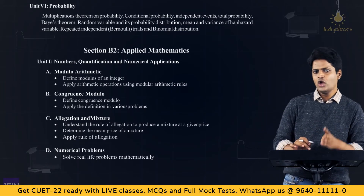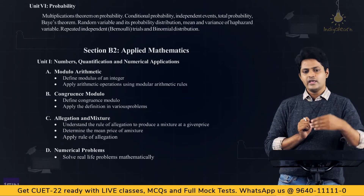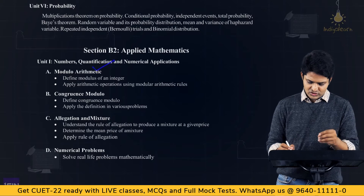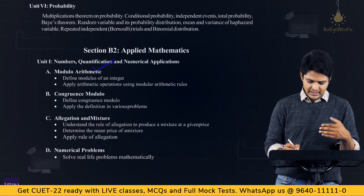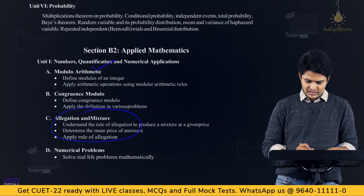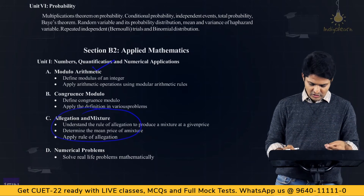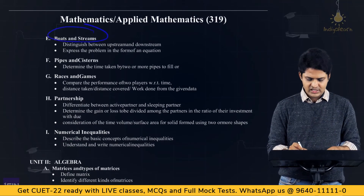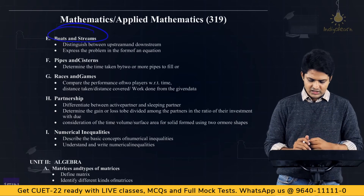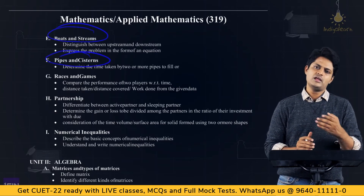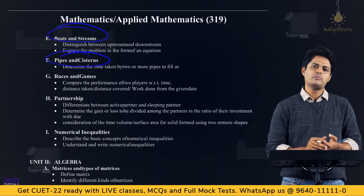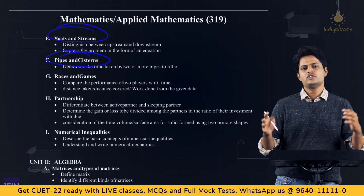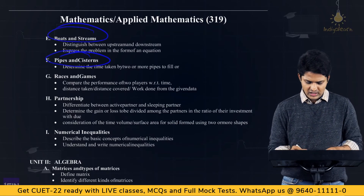For applied mathematics (Section B2), someone who studied applied maths in Class 11 and 12 can choose this. Topics include the basics of arithmetic, problems related to modulus, mixtures and allegations, numerical problems, and boats and streams covering upstream and downstream questions, as well as pipes and cisterns problems.